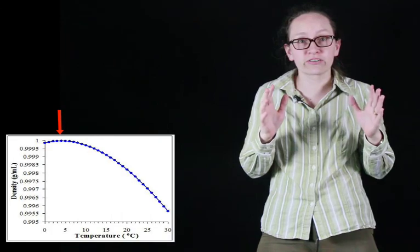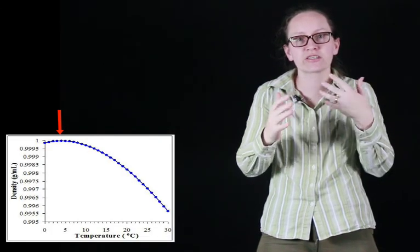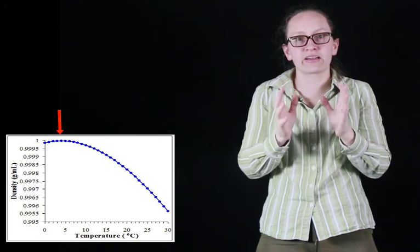Water is special because it has such a high specific heat, which is very lucky for us on Earth. Water is also special for another reason: we said that liquids expand as they are heated. Water does this as well, but only above 4 degrees C. Below 4 degrees C, water actually contracts as it's heated, which is, as we'll see, very lucky for fish.